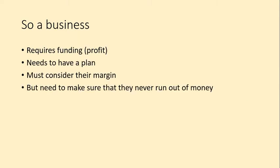Your business requires cash inflows — it might be funding, or it might be selling an item like clothes. You need funding to buy the materials for the clothes, and then hopefully you sell your clothes for more than you bought the materials for, making a profit. You need a business plan to make sure you've always got money in the bank. Your margin is the difference between the materials used to make your clothes and the price you sell them at, but you must never run out of money.